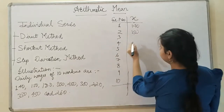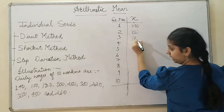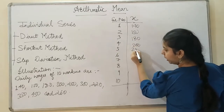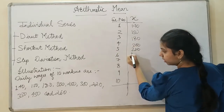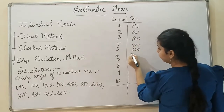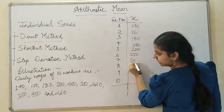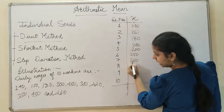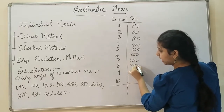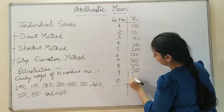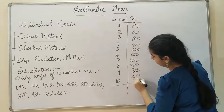Continuing in ascending order: then 180, then 200, then 220, then 250, then 260, then 300, 350, and 450.